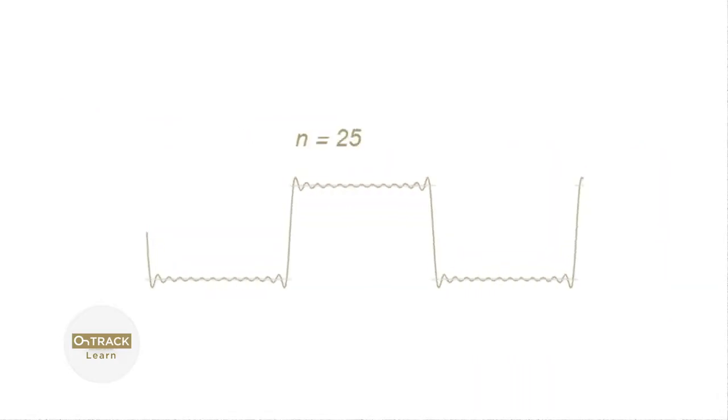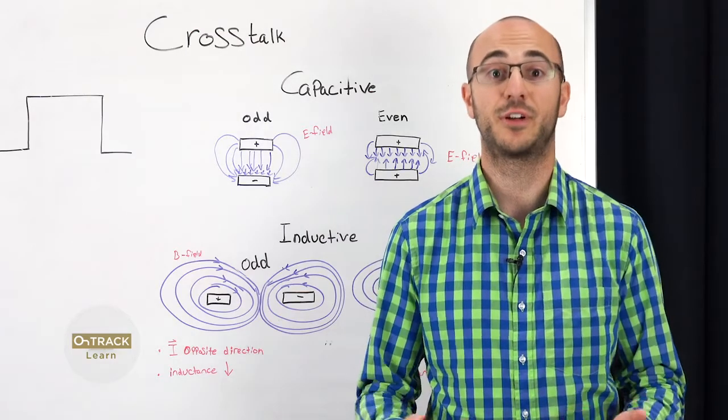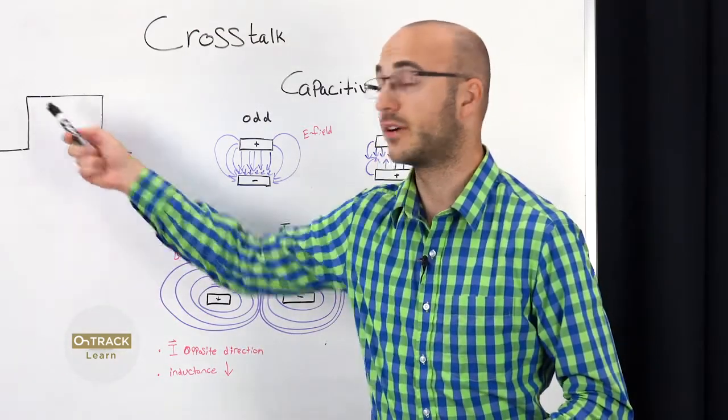And so to recreate a very good looking square wave, we have to go to very high frequency. And this is why everything needs to be thought of as high frequency, because you have these high frequency elements right here.